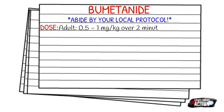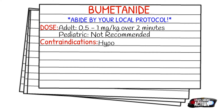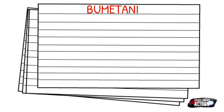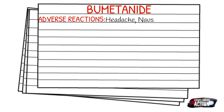Contraindications of Bumex include hypovolemia, hypotension, pregnancy, suspected electrolyte imbalances, and hepatic coma. Adverse reactions can include headaches, nausea, vomiting, ECG changes, dysrhythmias due to electrolyte changes, hypotension, dizziness, and muscle cramps.